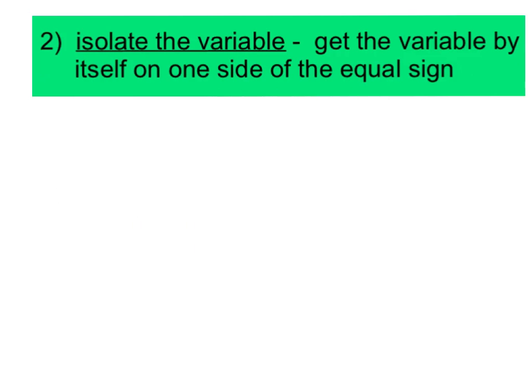Word number two is actually a phrase: isolate the variable. This means we want to get the variable by itself on one side of the equal sign. Please make sure to pause your video so you can get this down completely.